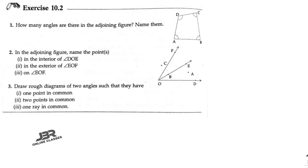In Exercise 10.2, the first problem asks: how many angles are there in the adjoining figure? Name them. So it's clearly here — angle A, angle B, angle C, angle D. That means total four angles. Your answer is four, and the angles are angle A, angle B, angle C, and angle D.